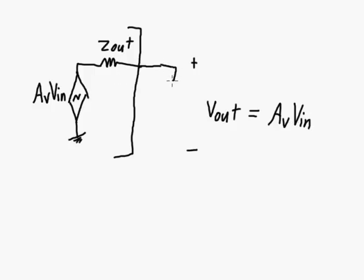But now if you apply a load here, some amount, let's just call it RL, this is no longer true. With a load, V out does not equal AV V in because we will have current and so we'll have some amount of voltage drop across Z out and whatever voltage is left over from AV V in will be applied across RL.